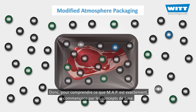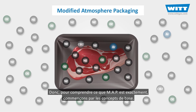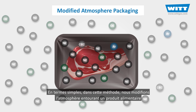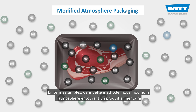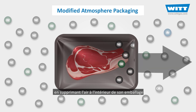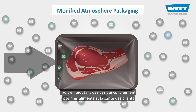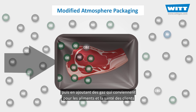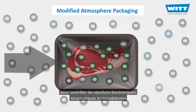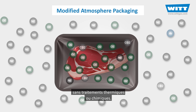To figure out what MAP exactly is, let's start with the basic concepts. Simply put, in this method we modify the atmosphere surrounding a food product by removing the air inside of its package and then adding gases that are safe for both food and customers' health, to control the biochemical, enzymatic, and microbial actions without temperature or chemical treatments.